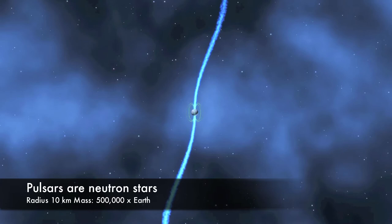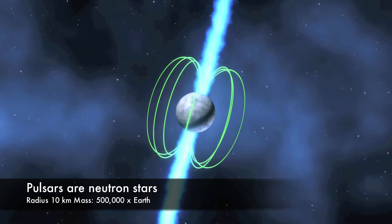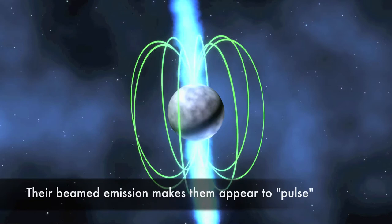Pulsars are neutron stars. They weigh about a half million times as much as the Earth but are only 20 km across. Their rotation makes them appear to pulse once per rotation period and they spin up to an amazing 700 times per second.